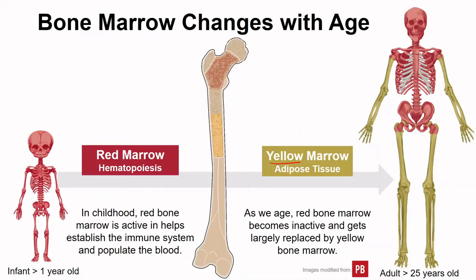It's actually possible for this process to go in reverse, with yellow marrow transitioning back to red bone marrow if there is a time of need. But generally in our early 20s, only the axial skeleton as well as the proximal ends of the humerus and femur contain red bone marrow, and the rest contain yellow bone marrow.